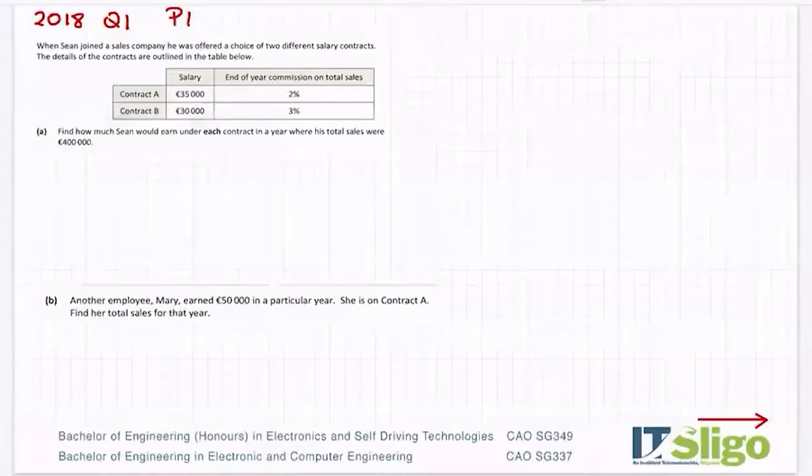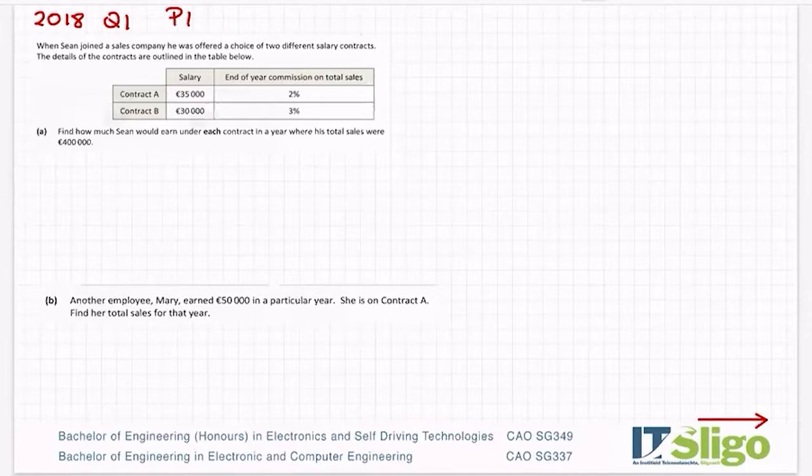Right, let's have a look at some financial maths type questions and the one I'm going to start with here is the 2018 question. I'm going to come back to the 2019 question at a later stage. The 2018 question was as follows: When Sean joined a sales company, he was offered a choice of two different salary contracts.